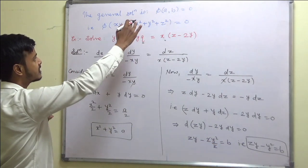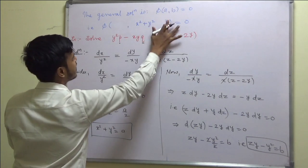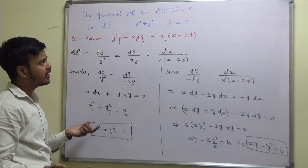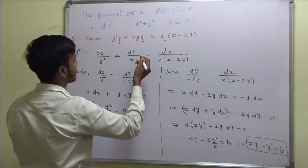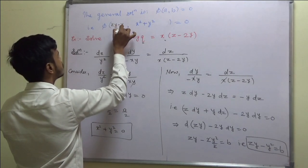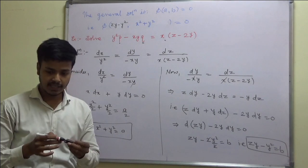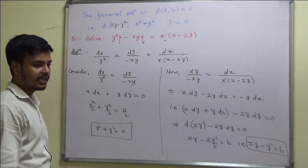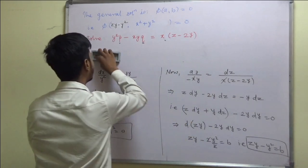Writing the general solution: φ(a, b) = 0 where a = x² + y² and b = yz - y². So the general solution is φ(x² + y², yz - y²) = 0.